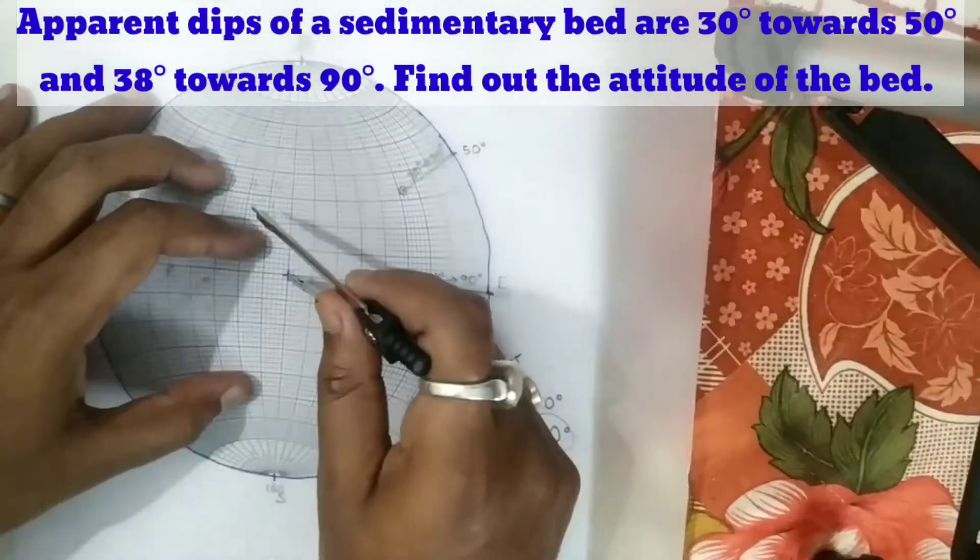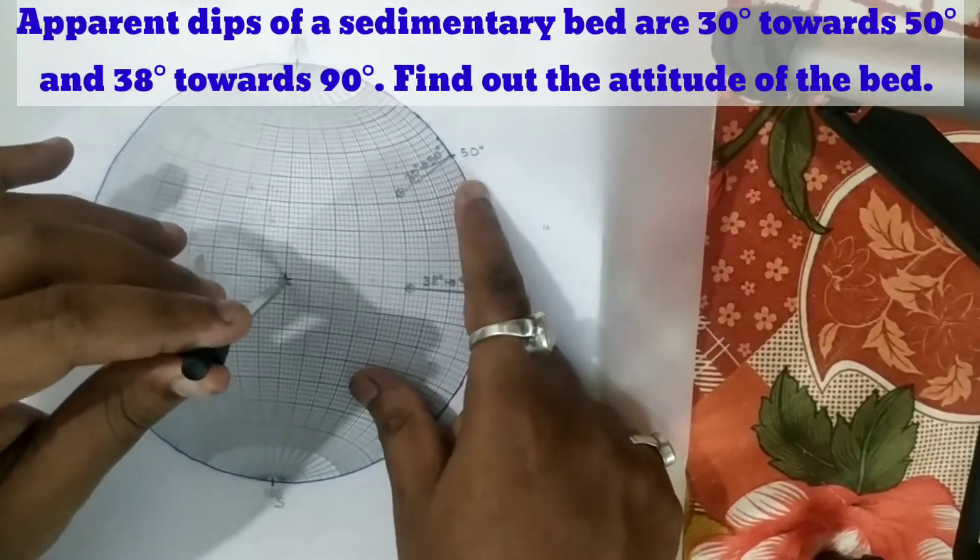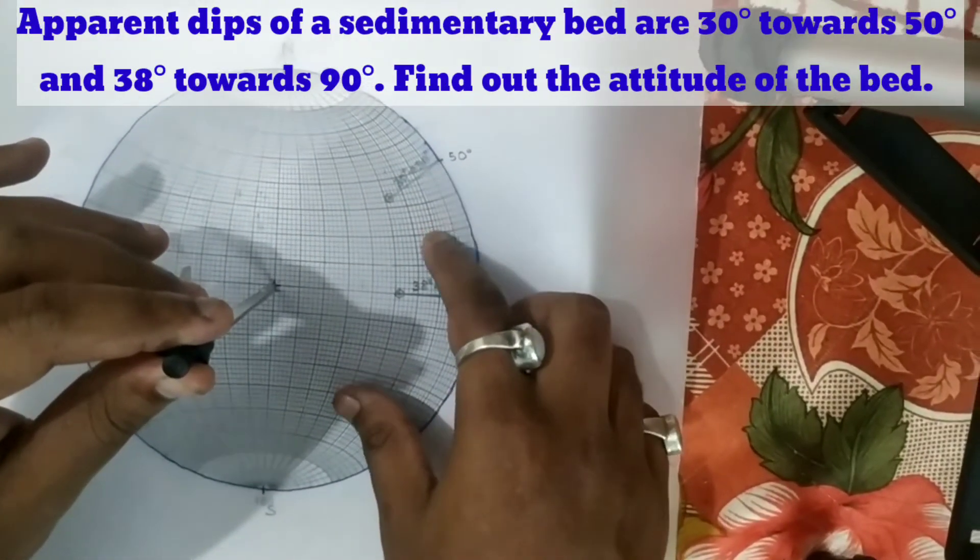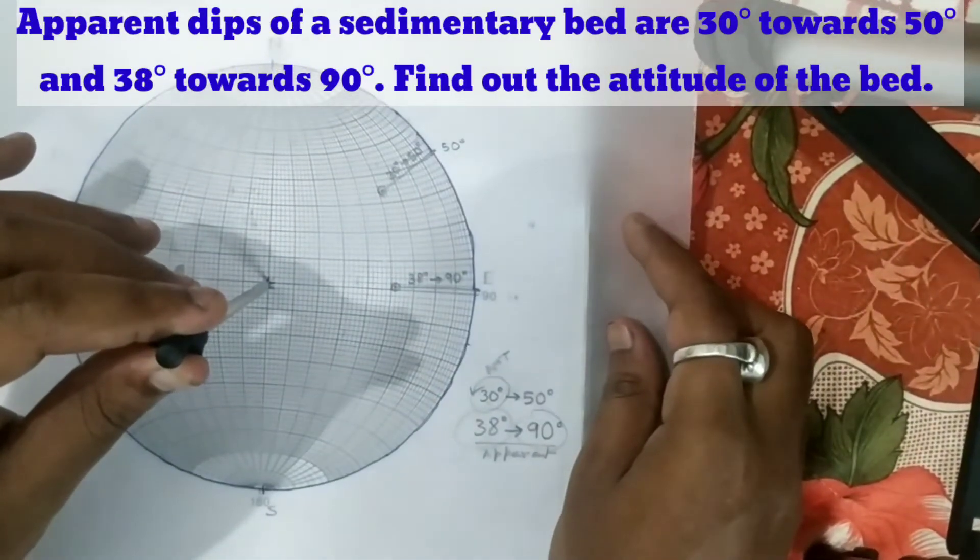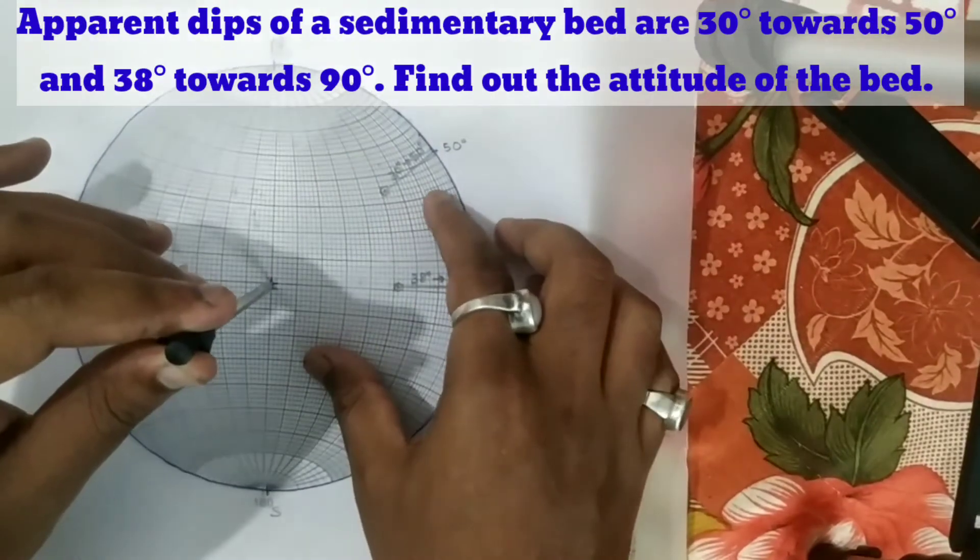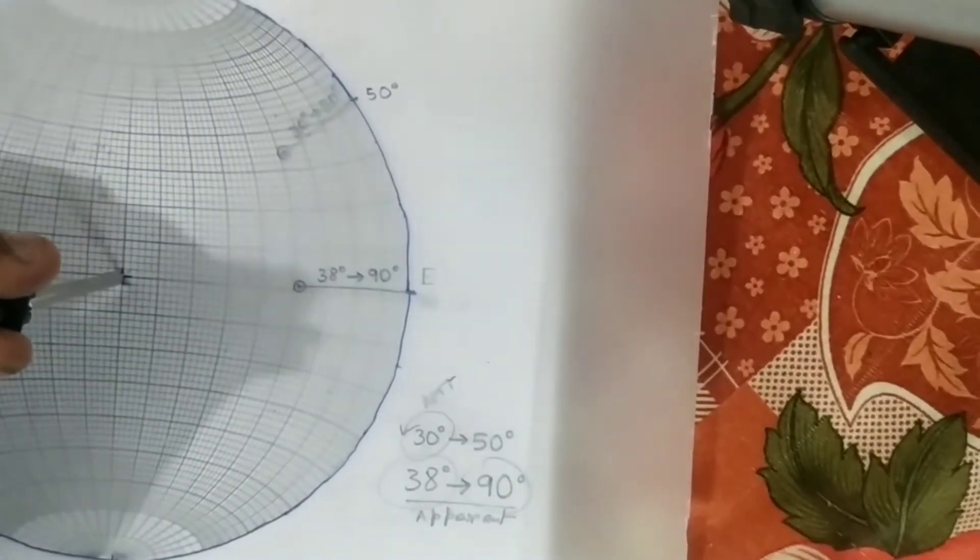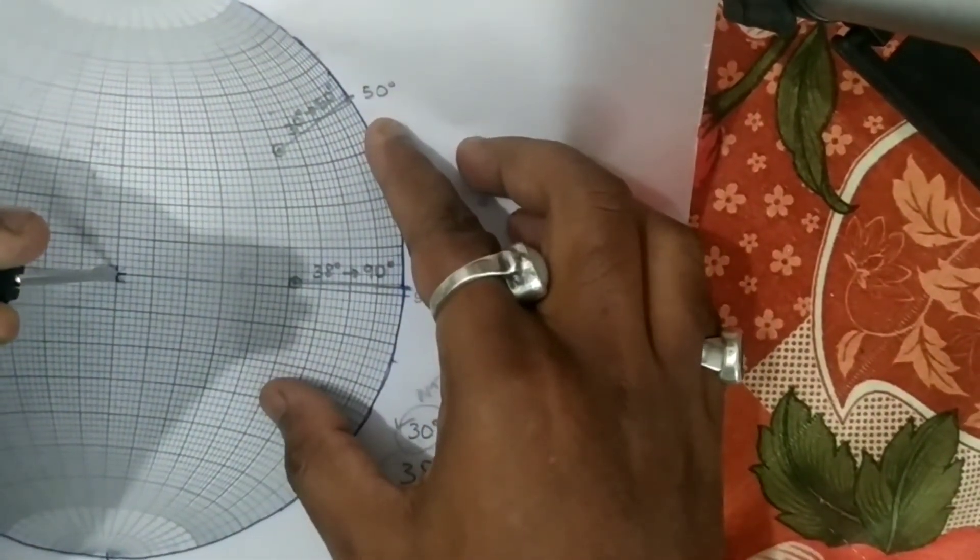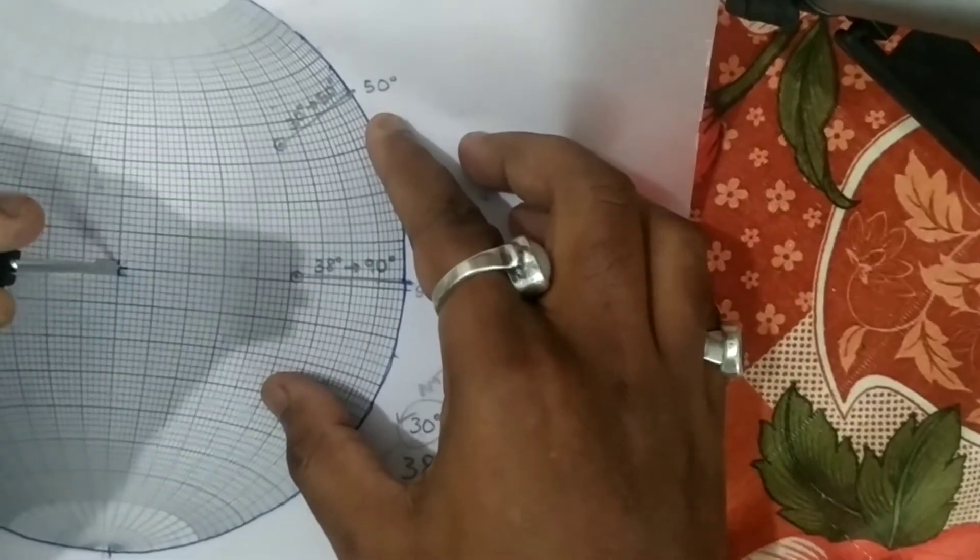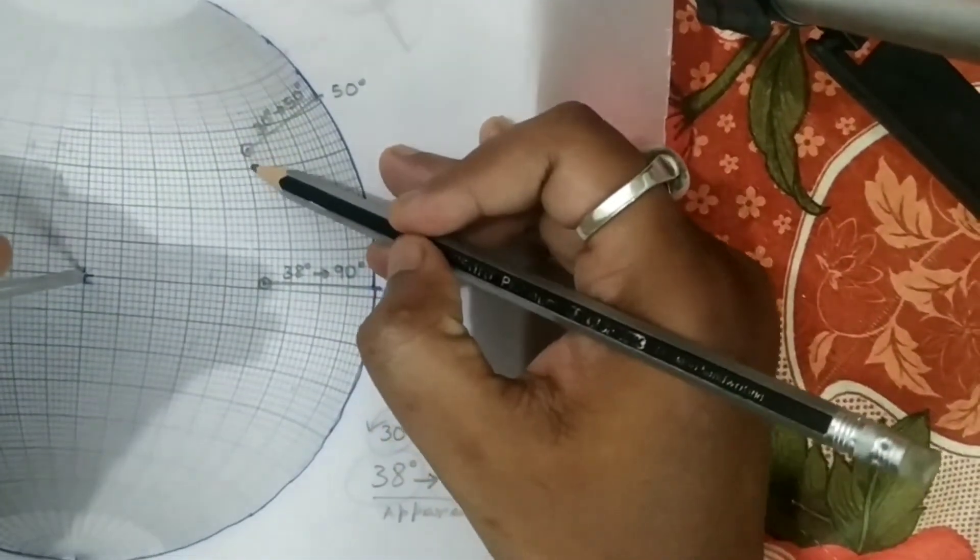Now we have to rotate the two points in such a way that they will lie on a great circle. Here they almost lie on a great circle but not properly. If you rotate this way, you can see that these two points are now lying on a great circle, on a single great circle.